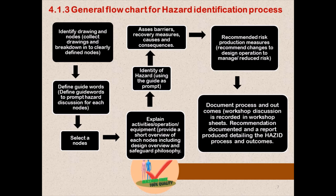The general flowchart for the hazard identification process is as follows: First, identify drawings and nodes — collect drawings and break them down to clearly define nodes. Then define guide words to prompt hazard discussion for each node. Select a node and explain its activities, operation, and equipment, providing a short overview including design overview and safeguard philosophy. Then identify hazards using the guide words as prompts. Assess barriers, recovery measures, causes and consequences. Recommend risk reduction measures — changes to design or operation to manage or reduce risk. Finally, document the process and outcomes: workshop discussion is recorded in workshop sheets, recommendations are documented, and a report is produced, detailing the HSECP process and outcome.